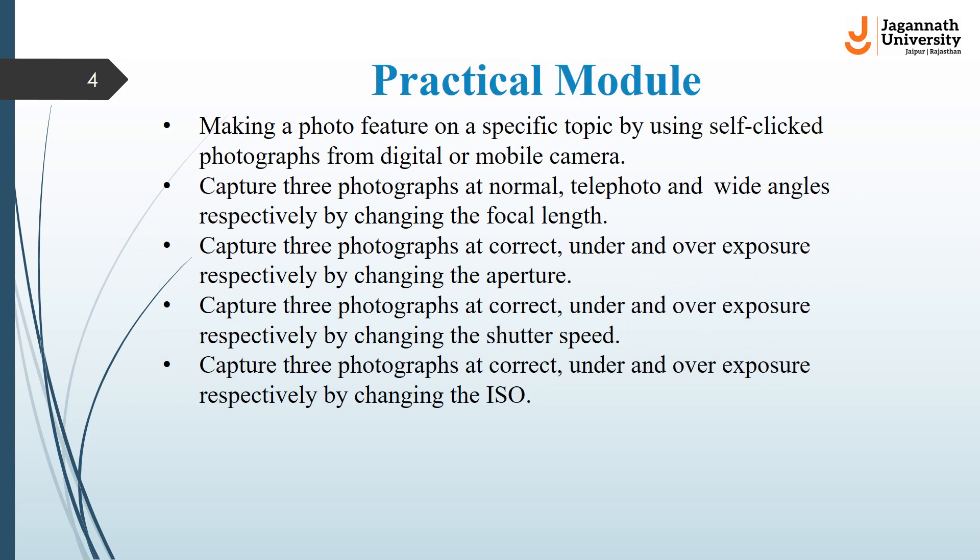In the practical mode, you will make a photo feature on a specific topic using self-clicked photographs from a digital or mobile camera. You will capture three photographs at normal, telephoto, and wide angle lens respectively by changing the focal length. Capture three photographs at correct, under, and over exposure by changing the aperture, shutter speed, and ISO. You will learn about shutter speed, focal length, auto and manual mode, aperture, correct exposure, under exposure, over exposure, and ISO.